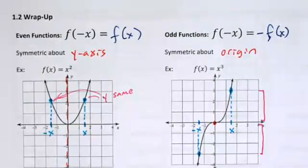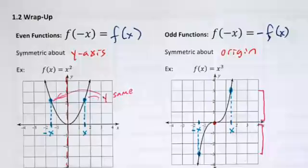That wraps up section 1.2. Moving to 1.3, you'll be doing some self-study on the 12 parent functions — the book calls them 12 basic functions. You'll practice identifying boundedness, continuity, asymptotes, and symmetry graphically, and determining whether functions are even or odd.